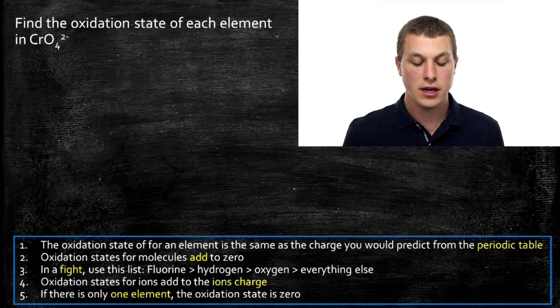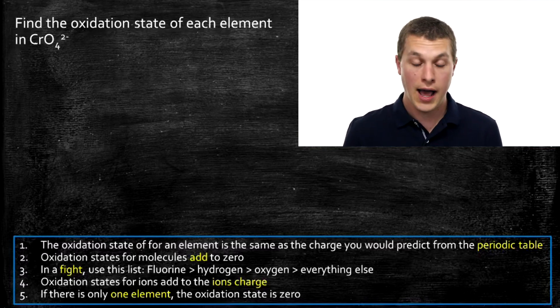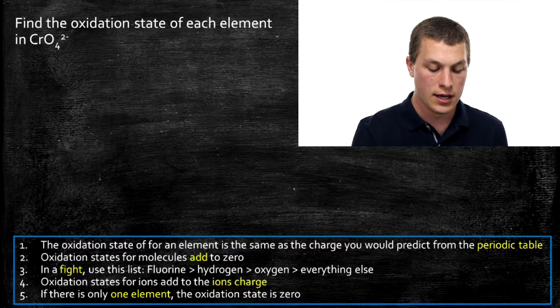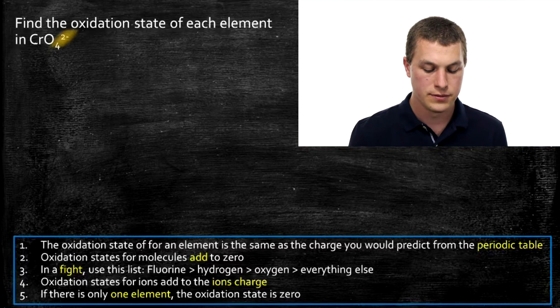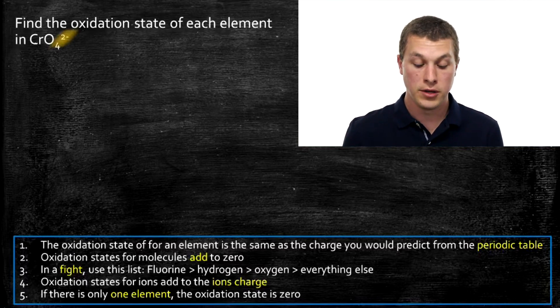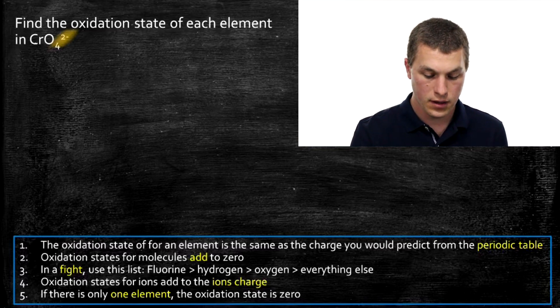Now we have CrO4 2 minus, or chromate, and we want to find the oxidation state on it. If we're dealing with an ion like chromate, the total oxidation state has to add up to the charge of that ion. In this case, two minus. When we figure out the oxidation state on oxygen and chromium, it has to add up to minus two.